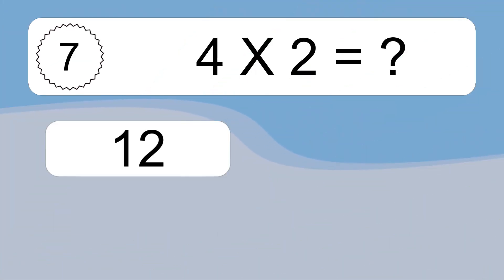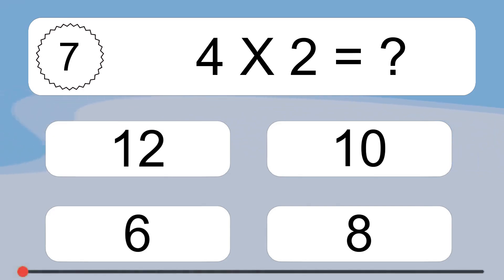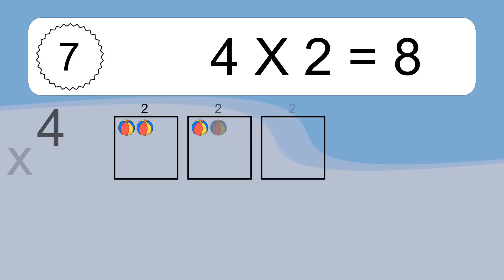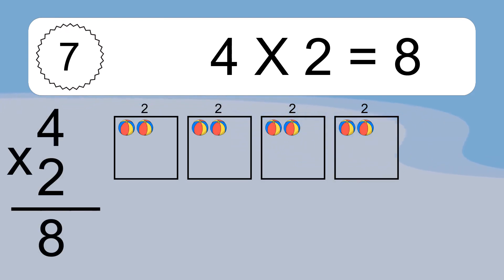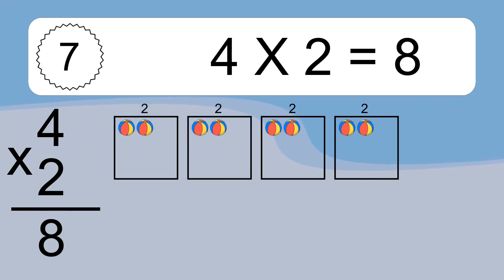4 times 2 equals what? 4 times 2 equals 8. We have 4 boxes, and each box has 2 colorful balls inside. If you count all the balls in all the boxes together, you will have 4 times 2 balls. This equals 8 balls.